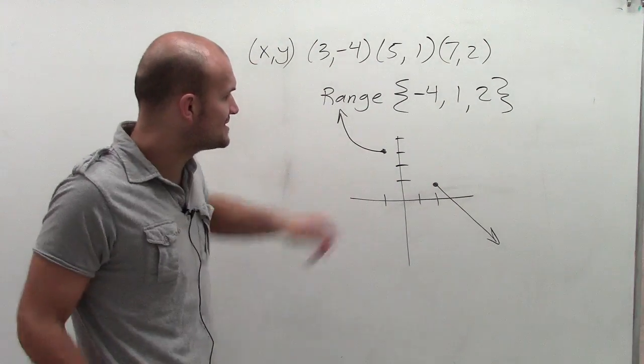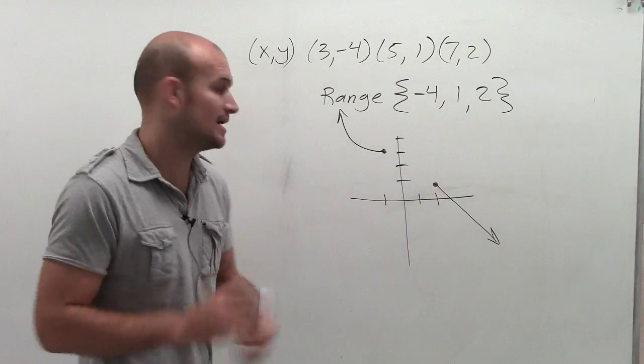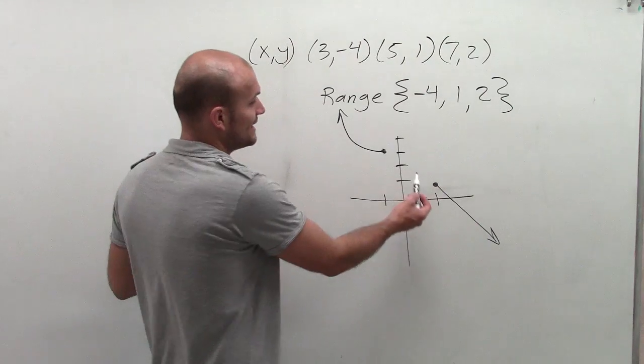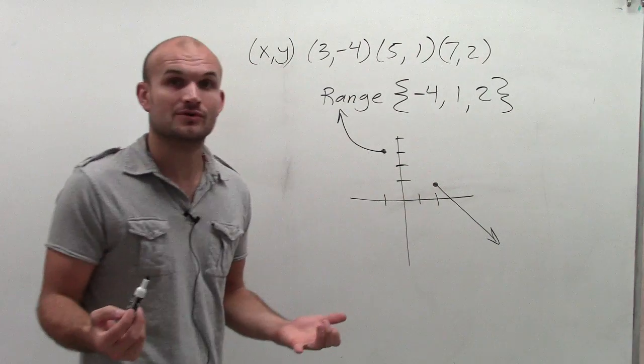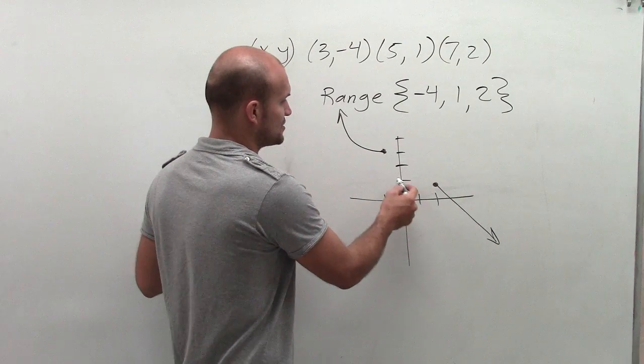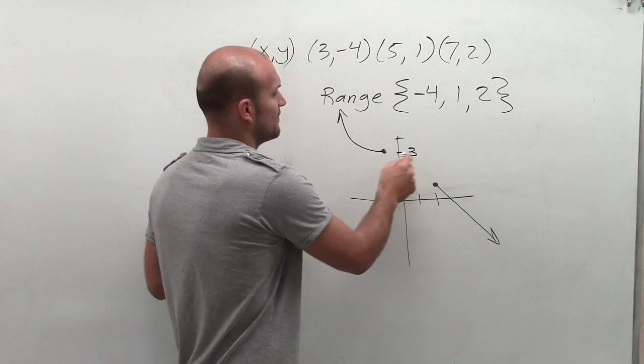Well, you can see that the range of this includes a couple different points. The range is all the y values of this graph. So let's look at here. Well, the y values start at 1, 2, 3. So it goes from 3 up.